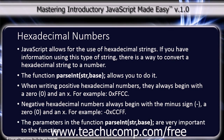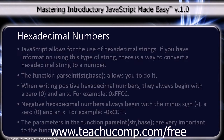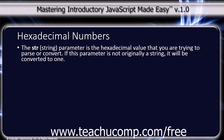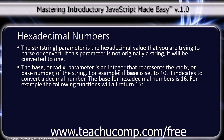The parameters in the function parseInt are very important to the function. The str or string parameter is the hexadecimal value that you are trying to parse or use or convert. If this parameter is not originally a string, it will be converted to one. The base parameter is an integer that represents the radix or base number of the string. For example, if base is set to 10, it indicates to convert a decimal number. The base for hexadecimal numbers is 16.